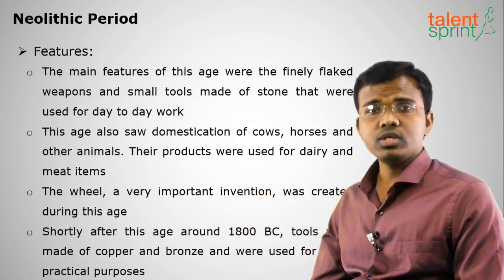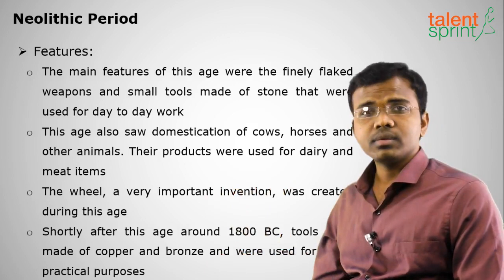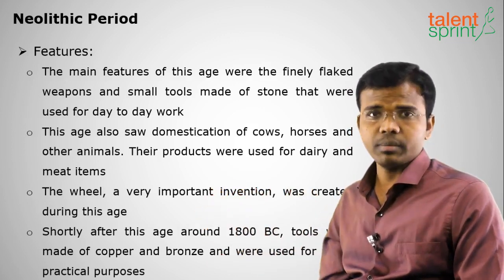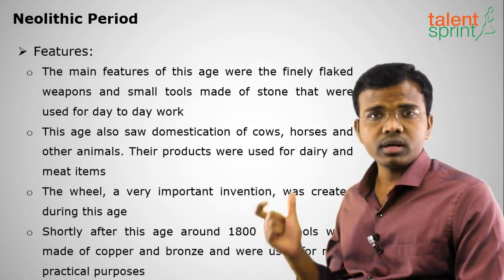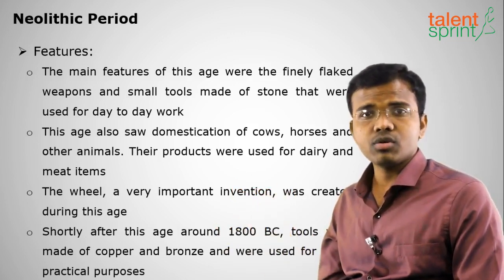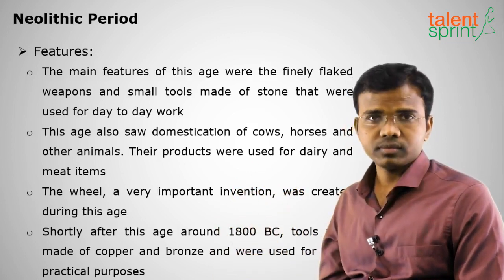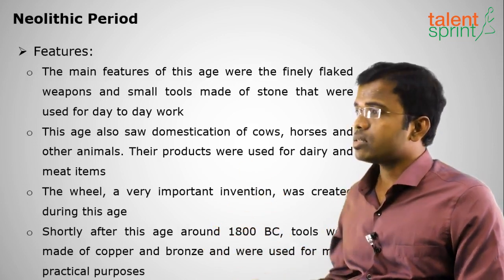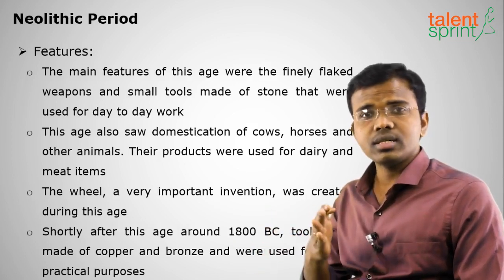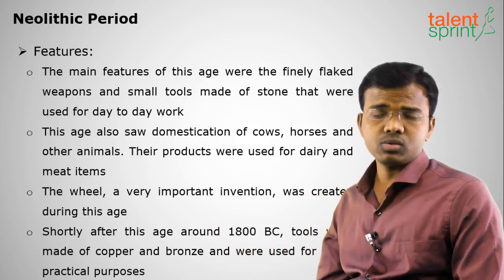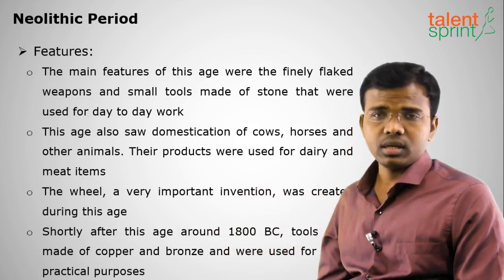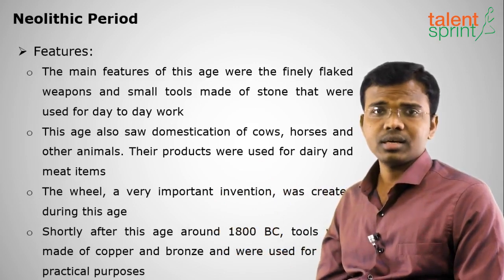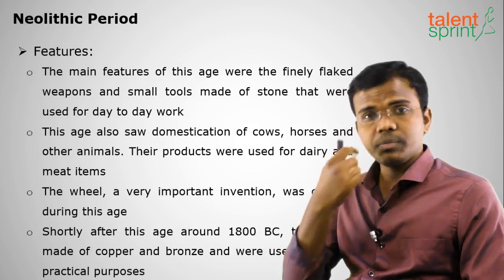Domestication was used for food production as well as for developing business activities through the barter system — for example, exchanging milk for other goods. An important invention of the Neolithic age was the wheel, which brought drastic changes: humans made bullock carts and chariots. After the Neolithic stage, tools made of bronze, iron, and copper were also used. Farming of wheat and barley, and later rice, also began in this period.